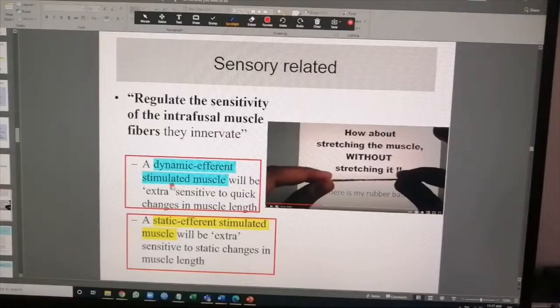Nuclear bag fibers are innervated by which type of gamma? Dynamic. So these muscles will be extra sensitive to quick changes. Naturally, if there's a muscle which is rich in nuclear chain fibers, it will be sensitive to static changes—the bulk amount changes in length. This is rate of change, this is amount of change. This is the dynamic response, this is the static response. I'm just connecting the gamma efferents to it now.